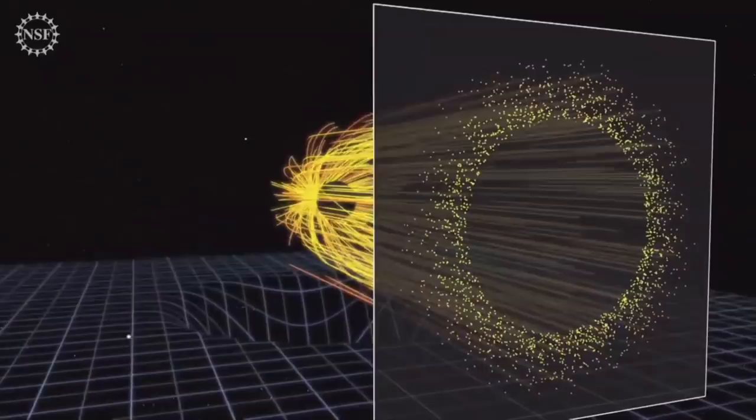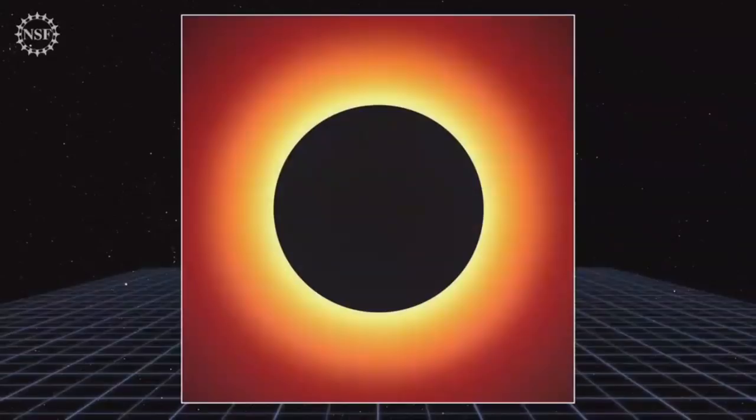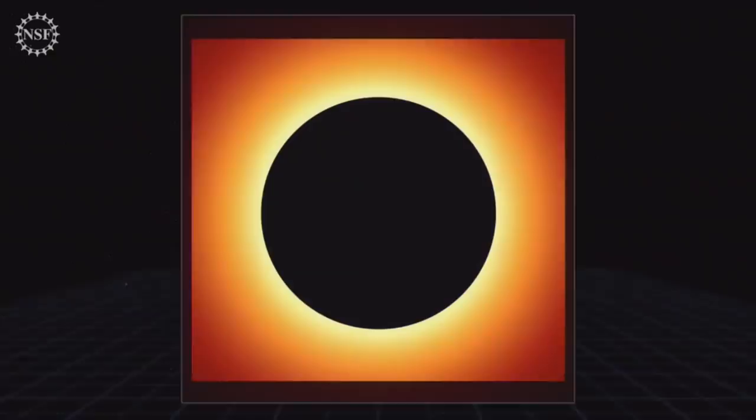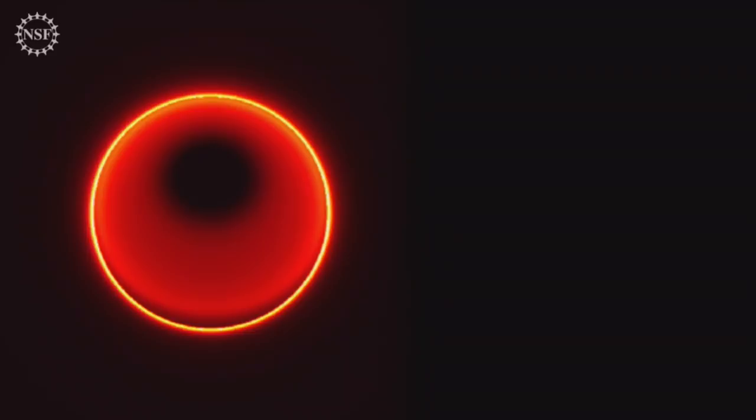This results in the dark shadow or silhouette cast by the black hole's event horizon upon the emission from the accretion flow and the jet. Importantly, the size and shape of the shadow is determined by gravity alone.